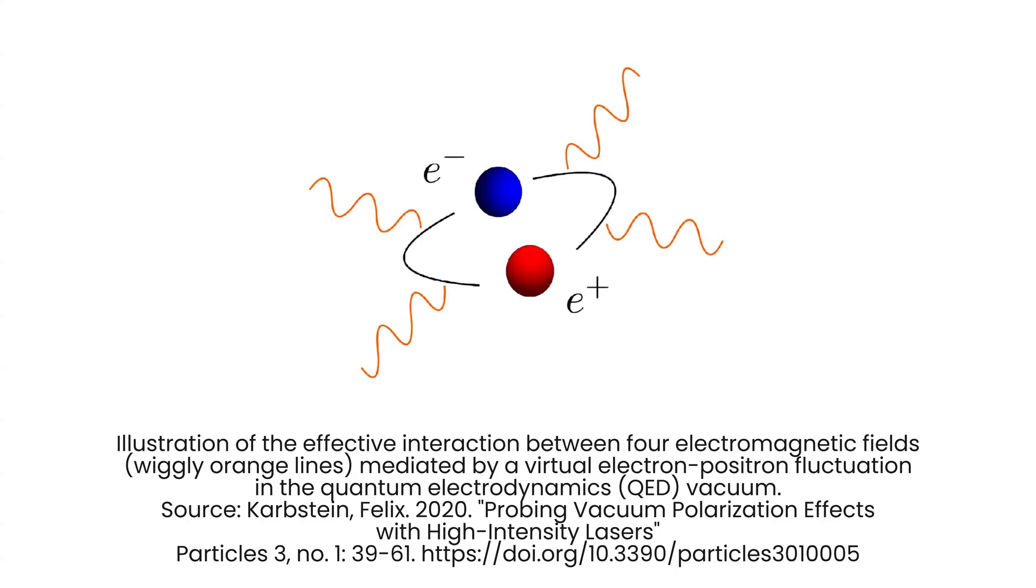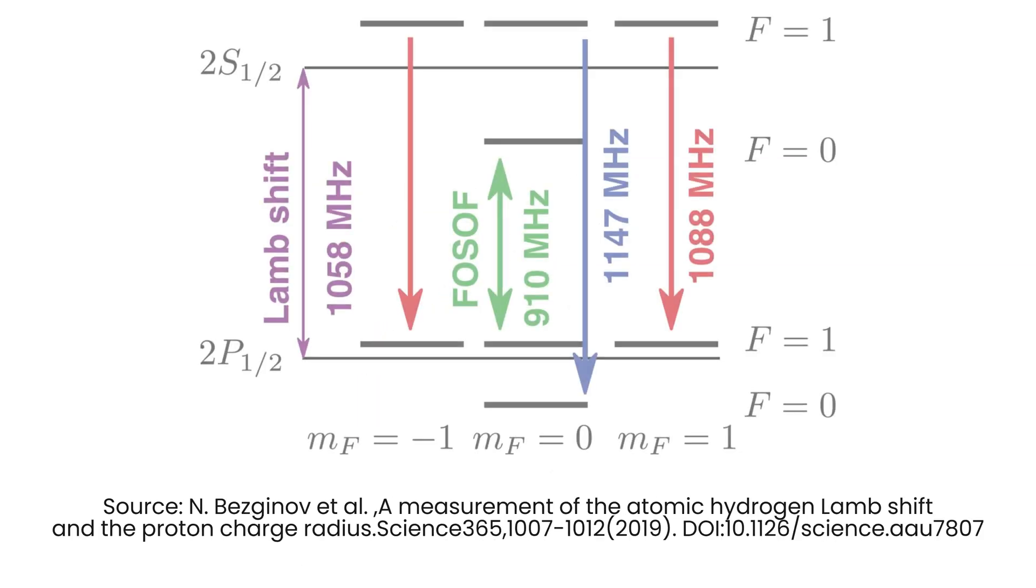These virtual particles, interacting with the external fields, influence the properties of the vacuum and contribute to observable effects, such as the Lamb shift in the hydrogen spectrum.